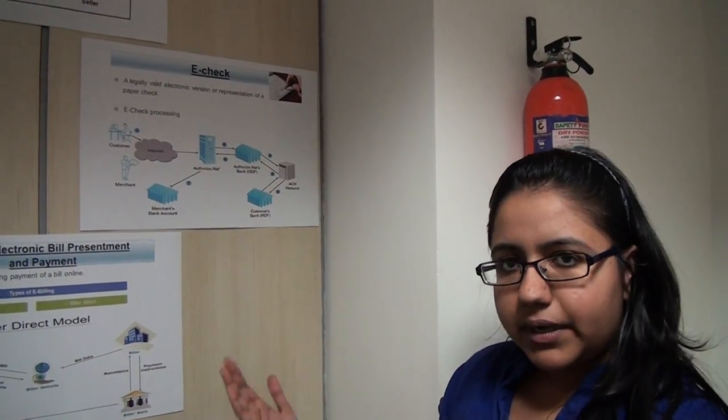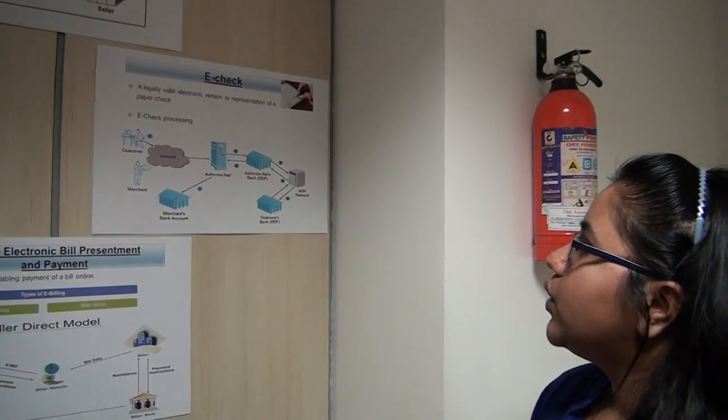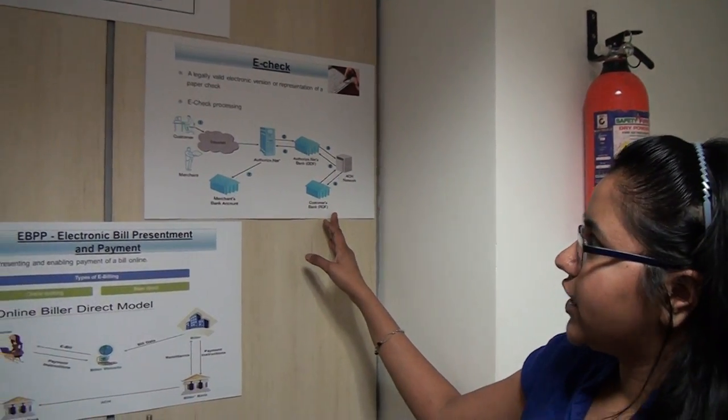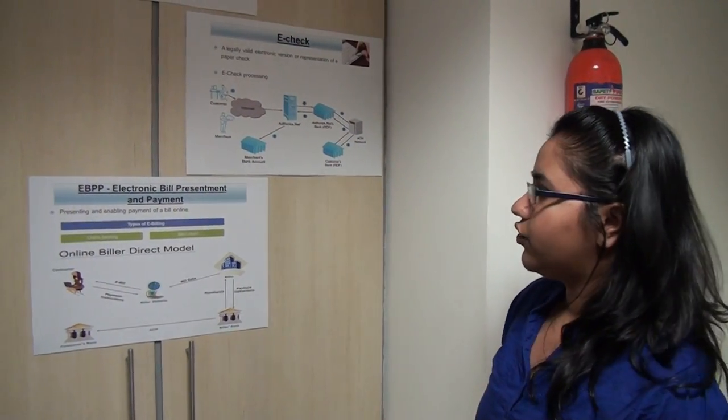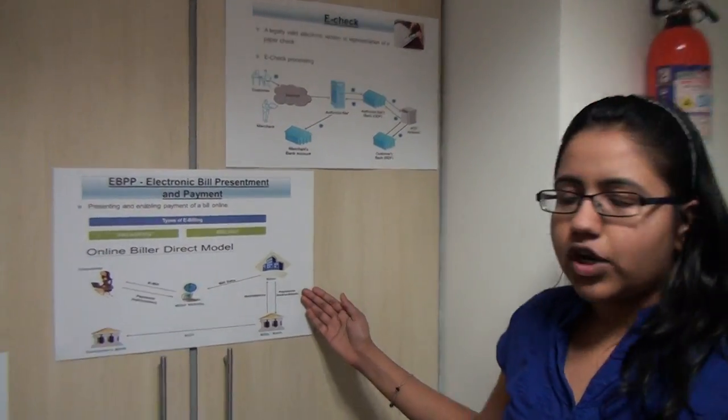It does the batch processing per day. So this is the flow of electronic check processing. It's very similar to the card flow processing. The only difference is ACH is in one of the ways. The third type is electronic billing.